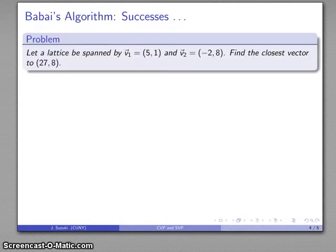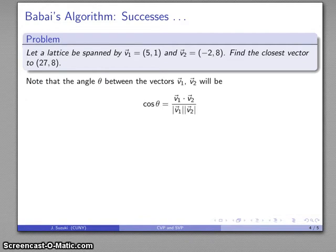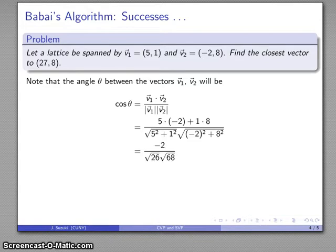Alright, so let's try it out. Let's take a lattice that's spanned by these two vectors: v₁ = (5,1) and v₂ = (-2,8). I'll find the vector closest to the point (27,8). If I look at the angle between our two vectors, I'll find the cosine of the angle between them is -0.05, which means the vectors are pretty close to being orthogonal. So this satisfies our reasonable orthogonality.